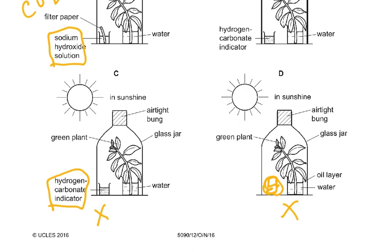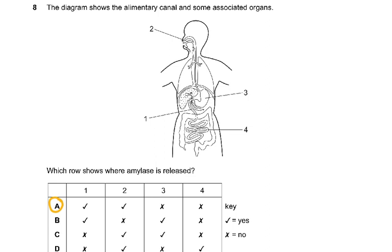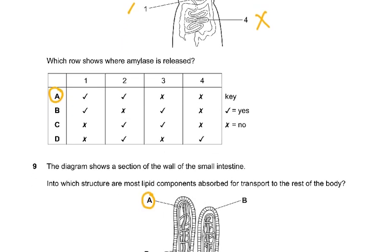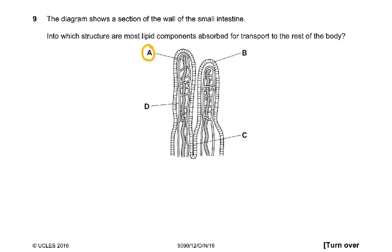Question eight: the diagram shows the alimentary canal and associated organs. Which row shows where amylase is released? Amylase is not released in the stomach. Structure one is the duodenum — amylase is released there from the pancreas — and two is the mouth, where salivary glands produce amylase. It is not released in the stomach or ileum, though it continues to act there as it travels with the food.